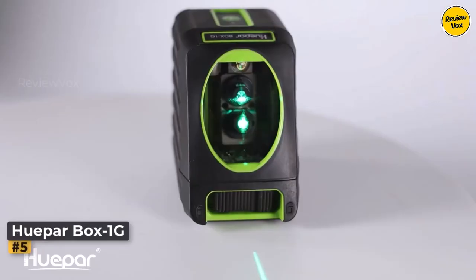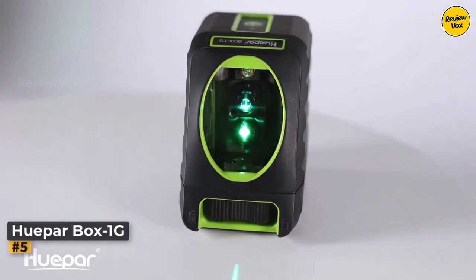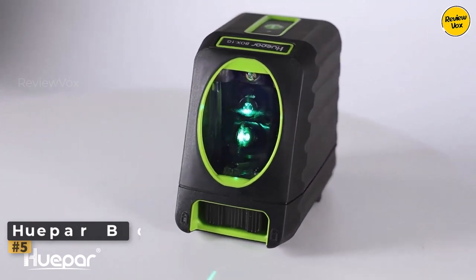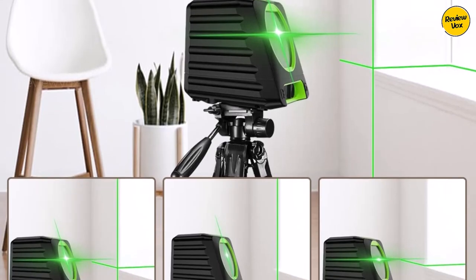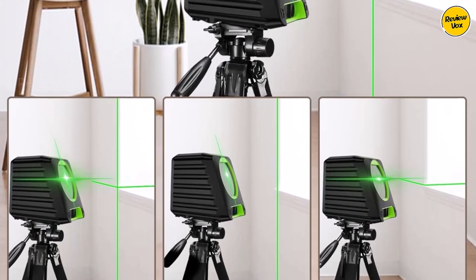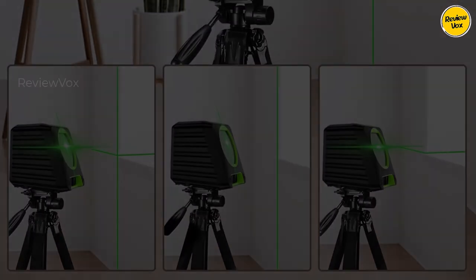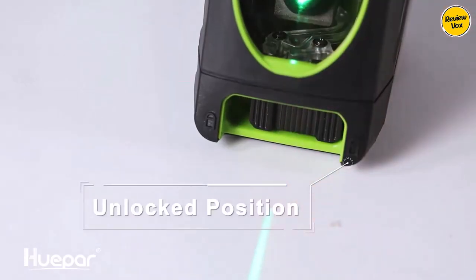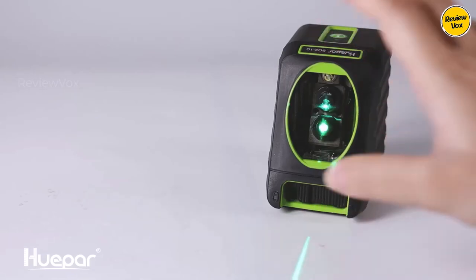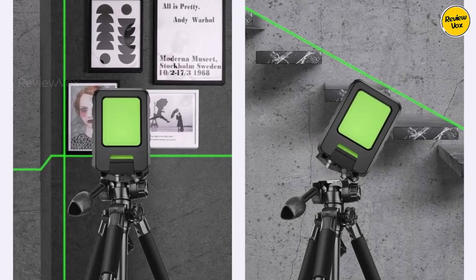Hupar Box 1G. The Box 1G laser level excels in various scenarios, offering performance comparable to other cross-beam lasers, with the added benefit of a bright 510NM green laser. Featuring a self-leveling pendulum working within 4 degrees, it includes a manual mode lock for tasks requiring specific angles, such as stair-laying.